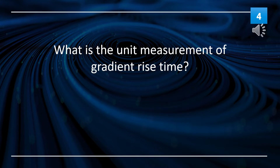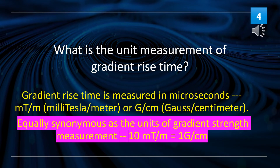What is the unit measurement of gradient rise time? Gradient rise time is measured in millitesla per meter, or gauss per centimeter. Note that these units are equally synonymous as the units of gradient strength measurement: 10 millitesla per meter equals 1 gauss per centimeter.